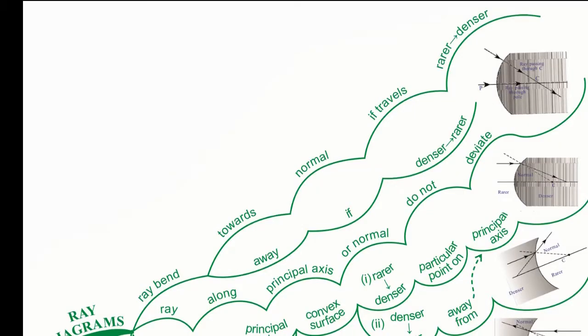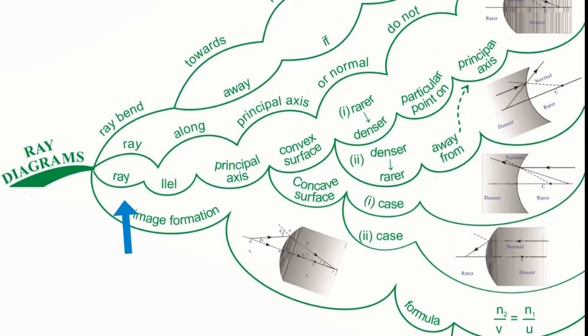The keywords of this branch are: Ray Bent, Towards, Normal, If Travels, Rarer to Denser, Away, If Denser to Rarer, Ray, Along, Principal Axis, or Normal, Do Not, Deviate, Ray, Parallel, Principal Axis.